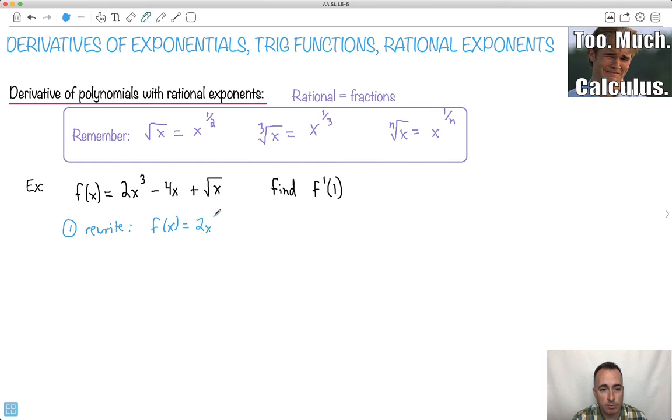The first two are fine, so I'm going to rewrite f of x. So 2x cubed, there's no problem with that one. Minus 4x, that one also looks good. It's this one that's the problem. So I'm going to rewrite it as a rational exponent. So this is the same thing as 1 over 2, the exponent here.